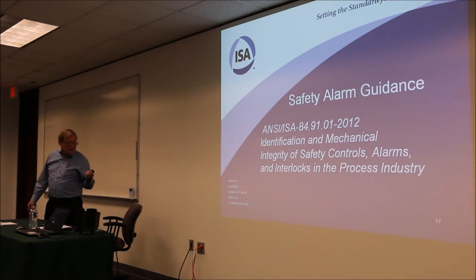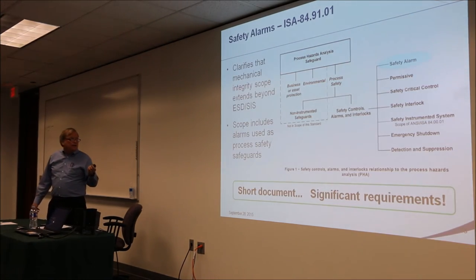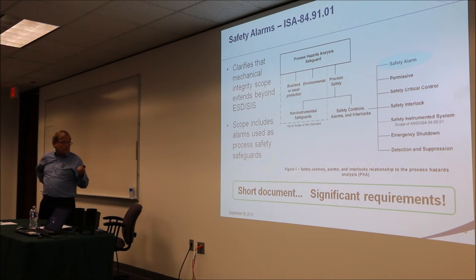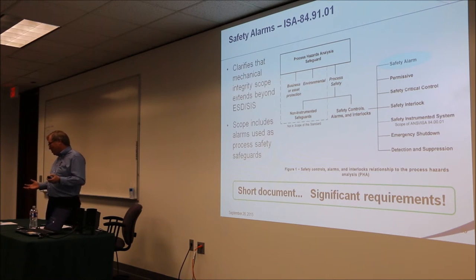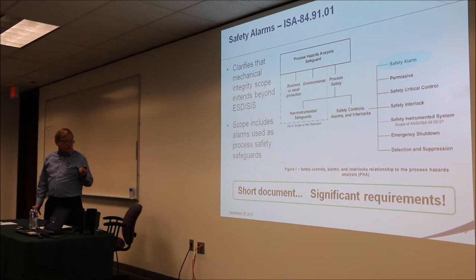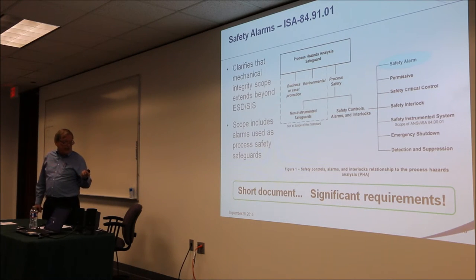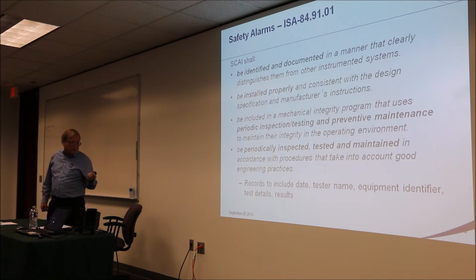Moving on to ISA 84.9101: the main intent of this standard was to clarify that safety instrumentation extends beyond SIS — any kind of control, alarm, or interlock where you're claiming risk reduction falls under this standard and needs to be in a mechanical integrity program. It's not a long document, but the requirements are important: you need a mechanical integrity program with testing, maintenance, best engineering practice for design and installation, and similar elements.